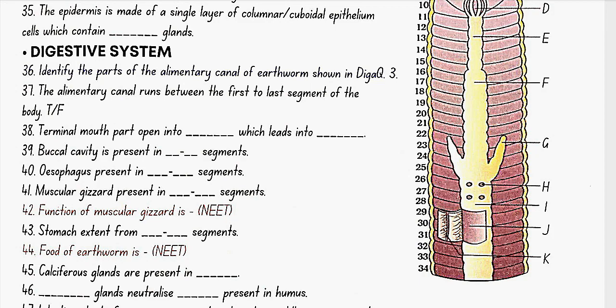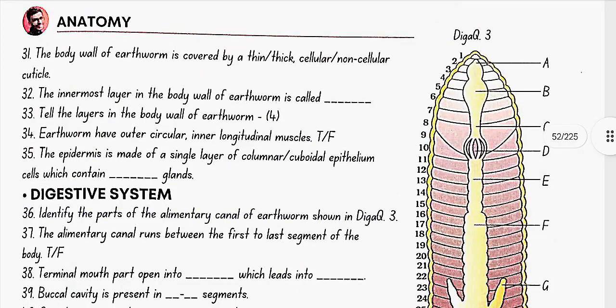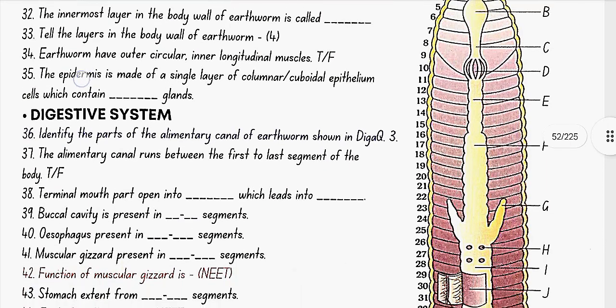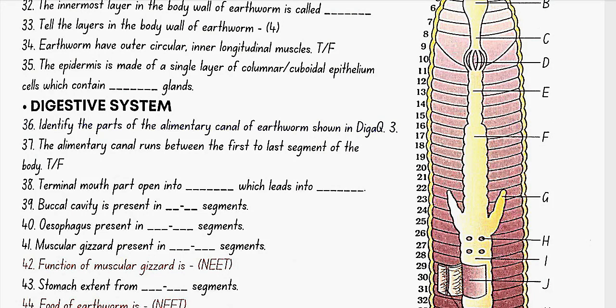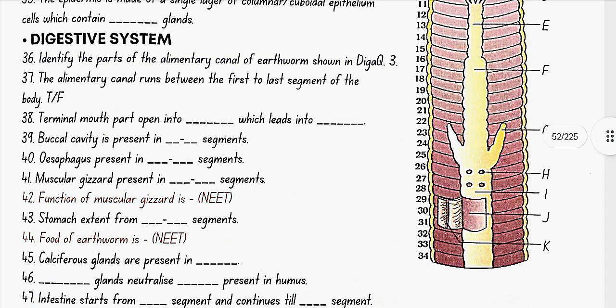Digestive system. Identify the parts of the alimentary canal of earthworm shown in diagram 3. A is the mouth, B is pharynx, C is esophagus, D is gizzard, E is stomach, F is pre-typhosolar part of the intestine, G is intestinal caecum, H is the lymph gland, I is typhosolar part of the intestine, J is intestinal lumen, K is typhosol.